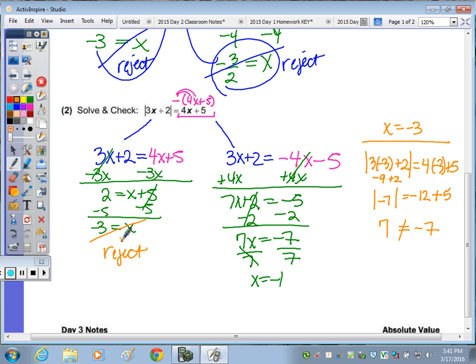And let's see if x equals negative 1 works. So the absolute value of 3 times negative 1 plus 2, equal to 4 times negative 1 plus 5. On this side, we get negative 4 plus 5, which is 1. On this side, we have negative 3 plus 2, which gives us the absolute value of negative 1, which is 1. So that checks, and our only solution, therefore, is x equals negative 1.